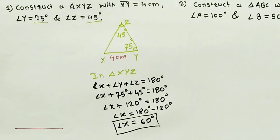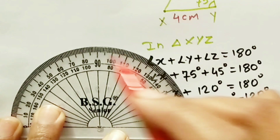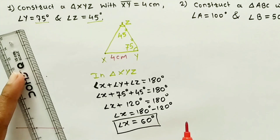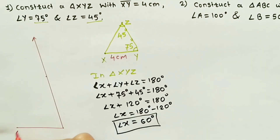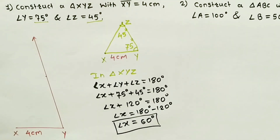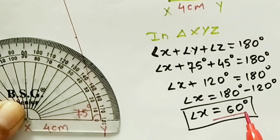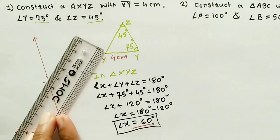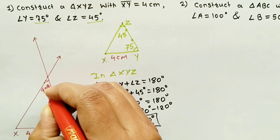After that, you have to take your protractor and make a 75 degree angle. We will mark the base angles — section 1 and section 2 — to locate the base angle X.